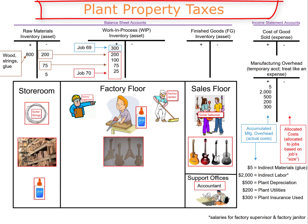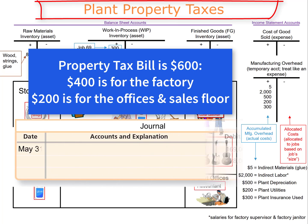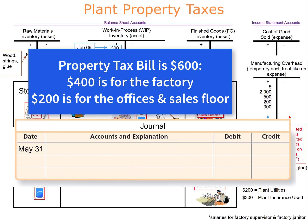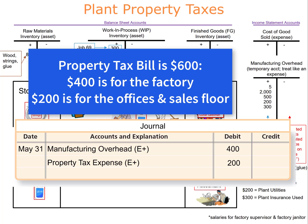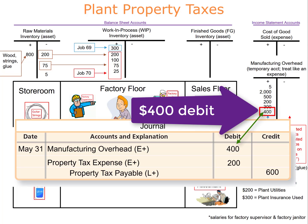At the end of the month, the accountant receives a property tax bill for $600. Of that, $400 is for the factory, so it's an indirect product cost — manufacturing overhead is debited for $400. The other $200 is allocated to the sales floor and support offices, so it's treated as a period cost and expensed as property tax expense. Because the bill will be paid later, the credit account is property taxes payable. The $400 debit is posted to manufacturing overhead.